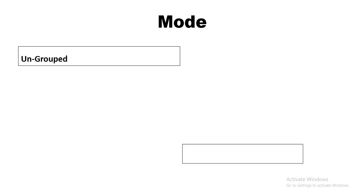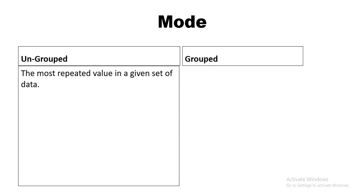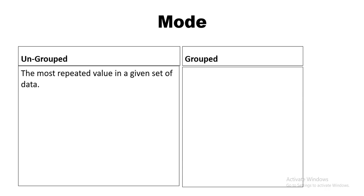Let's look at the formula. For ungrouped data, the mode is simply the most repeated value in a given set of data. The same applies to simple frequency distribution — we look for the observation that has the highest frequency, and that observation is the mode.